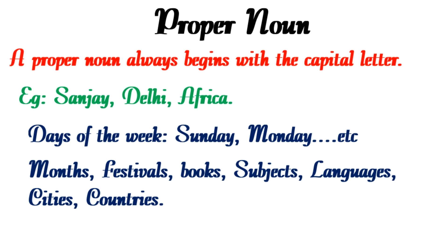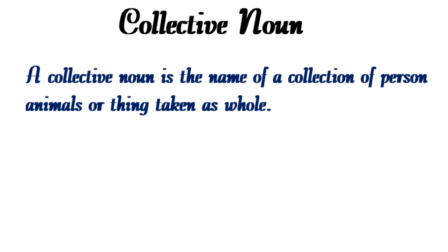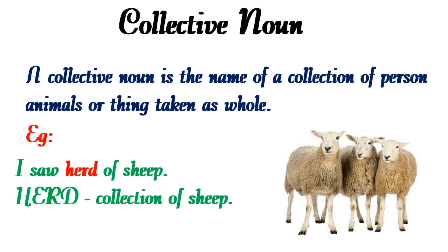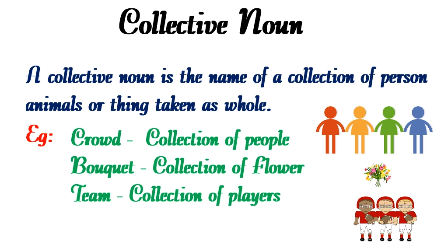A collective noun is the name of a collection of persons, animals, or things taken as a whole. For example, 'India has a strong army' — here 'army' is the collection of soldiers. 'I saw a herd of sheep' — 'herd' is the collection of sheep. A few more examples: crowd (collection of people), bouquet (collection of flowers), team (collection of players).